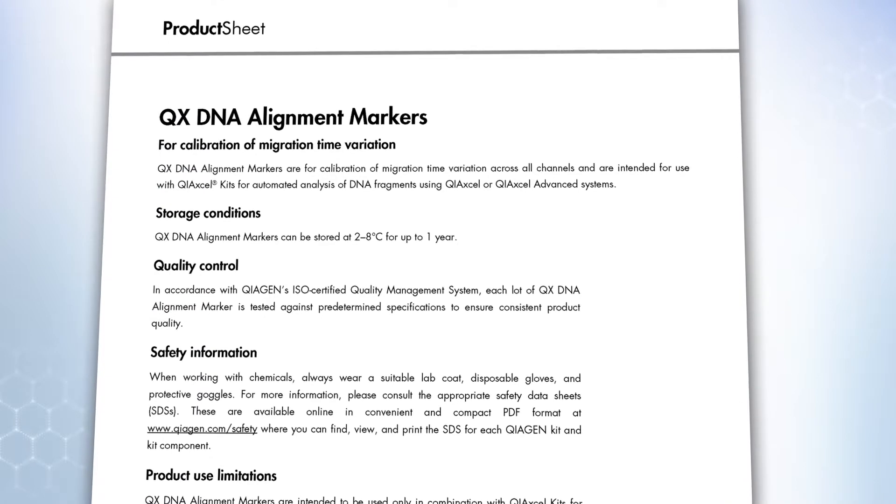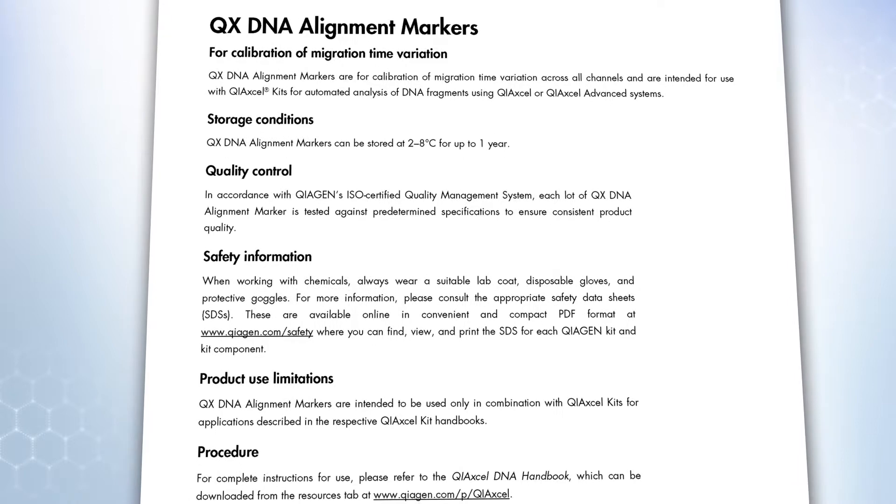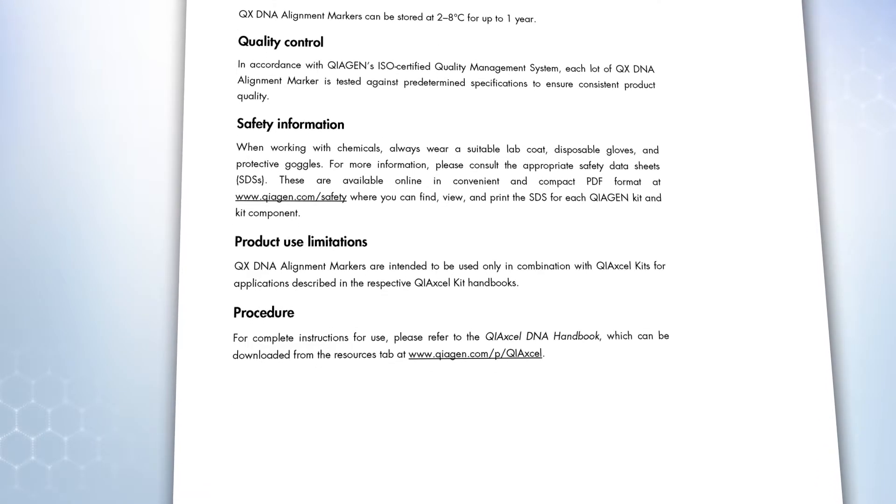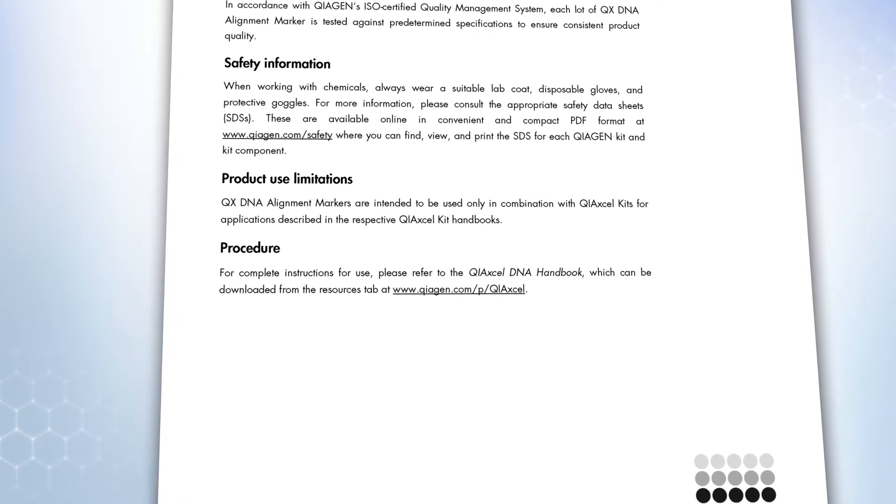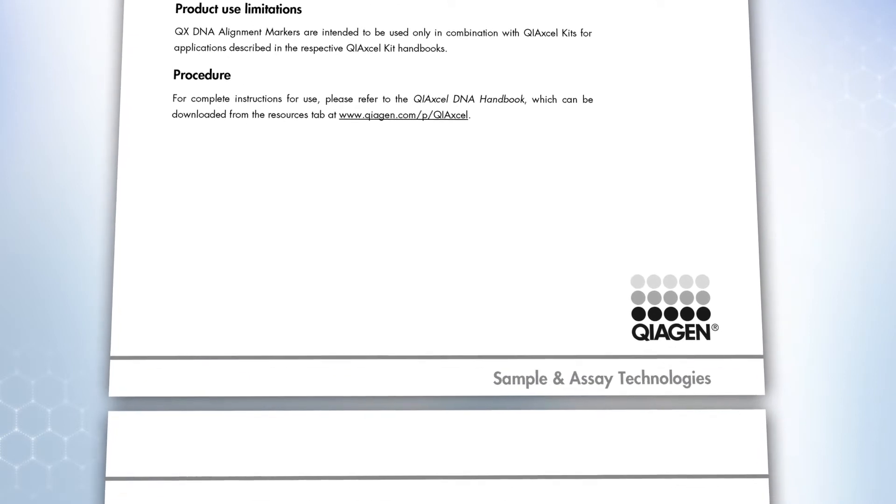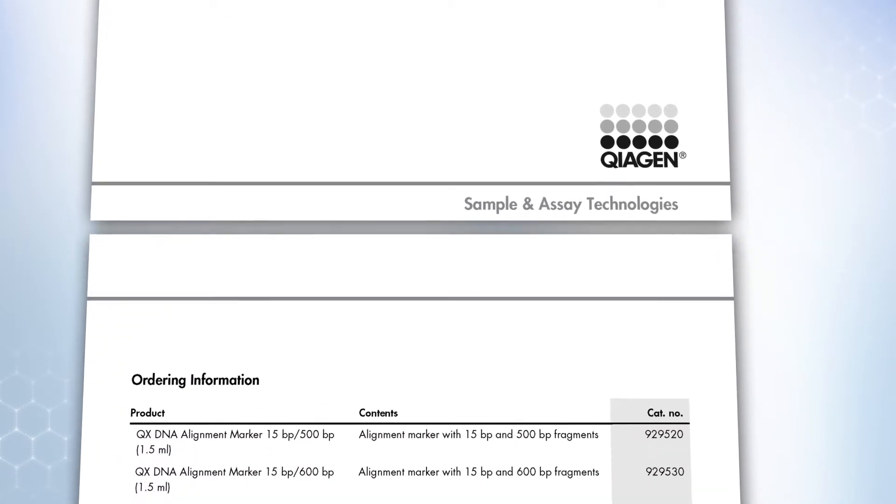The QIAXcel Alignment Marker is required in every run on every position to compensate for migration differences between the different capillaries. This prevents the smiley effect, which you would see on a classical agarose gel. There are different alignment markers available. Depending on the method you are using and fragment sizes being analyzed, select the appropriate alignment marker.